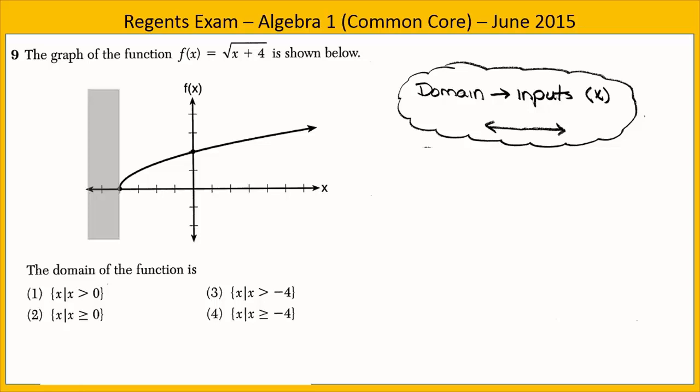Let's take a look at the x-axis. The values for x that make sense begin at negative 4 and move to the right. Choices 1 and 2 don't make sense — x greater than 0 or greater than or equal to 0 — because we have x values as far as negative 4. If we look at the graph, we can see there is a closed circle at negative 4, which means x is greater than or equal to negative 4, because negative 4 is included.